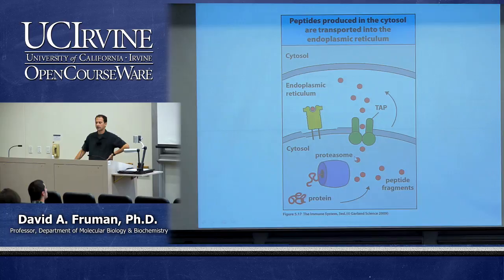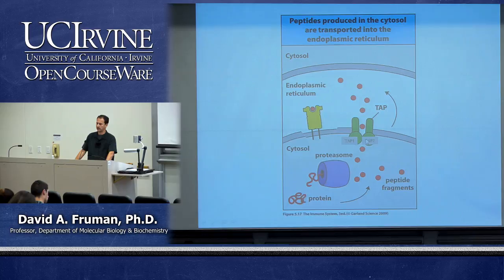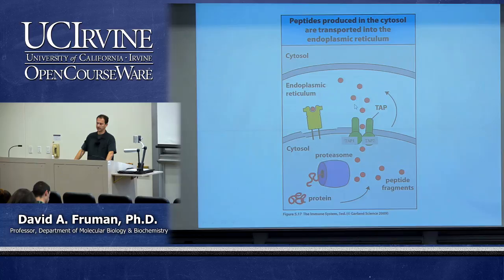The second step is getting these hydrophilic peptides across the membrane into the ER lumen. That occurs through a structure known as TAP — the transporter associated with antigen processing — which is a dimer of TAP1 and TAP2. If you have a mutation in either TAP1 or TAP2, as found in certain cell lines, they cannot transfer peptides from the cytoplasm to the endoplasmic reticulum and have severe defects in presenting peptides with MHC class 1. So: degradation, then transport through the TAP1/TAP2 heterodimer.